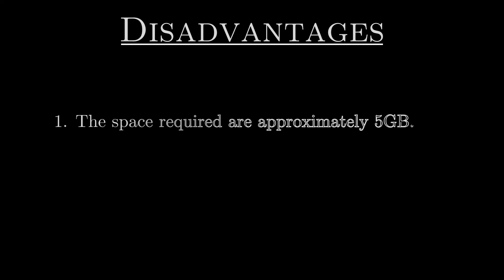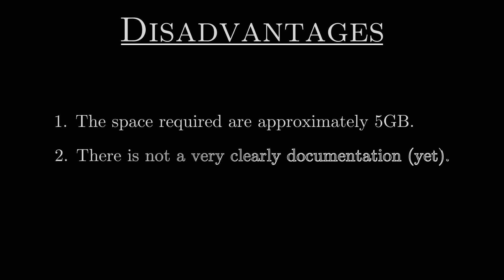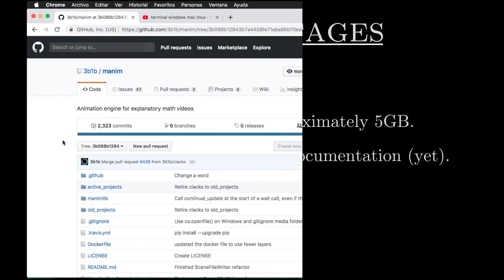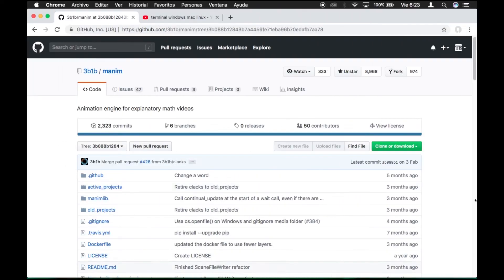Now, the possible disadvantages. The space required by all the programs is approximately 5GB, and there is not very clear documentation. So for this course, the version of Manim of February 3rd, 2019 will be used.